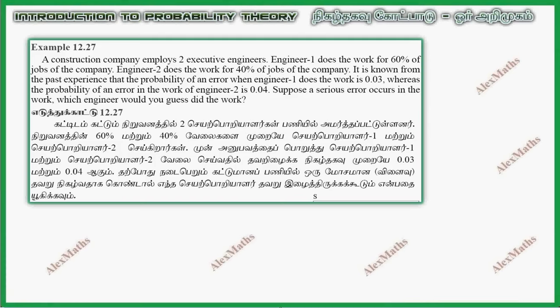Hi students, this is Alex. Here's Example 12.27. A construction company employs two executive engineers. Engineer 1 does the work for 60 percent of the jobs of the company, whereas Engineer 2 does the work for 40 percent of the jobs of the company.